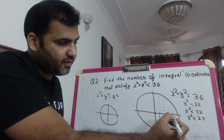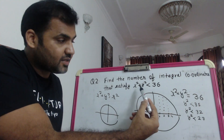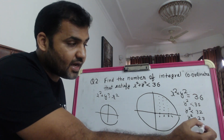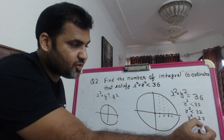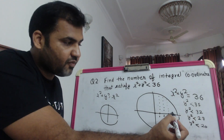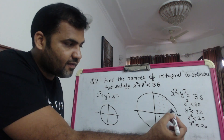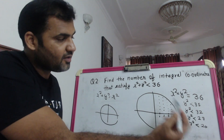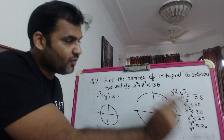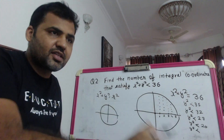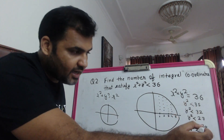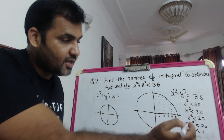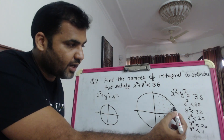If I put x = 4, then 4² = 16, so y² must be less than 36 - 16 = 20. The maximum value of y is now 4, because 4² = 16 < 20 but 5² = 25 is not less than 20. So for x = 4, y can only be 1, 2, 3, or 4. If I put x = 5, then y² must be less than 36 - 25 = 11. So y can only be 1, 2, or 3.